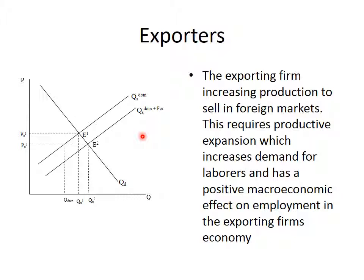Here is the discussion of exporters. This is exactly the same graphic — a particular firm produces in the domestic market, here's demand for their goods domestically. Their domestic supply plus foreign sales slides the supply curve outward, increasing their production level. Because it increases their production level, it increases the demand for labor and, on a macroeconomic level, has a positive effect on employment in their home country. U.S. exporters create a positive effect on employment levels in the United States.